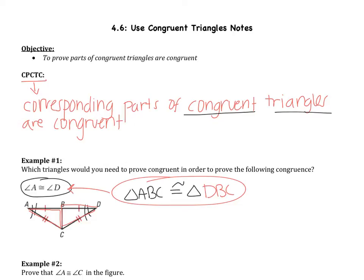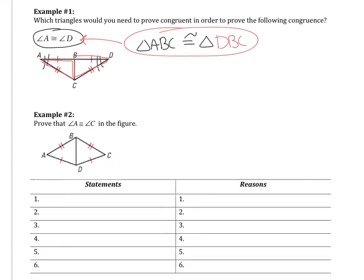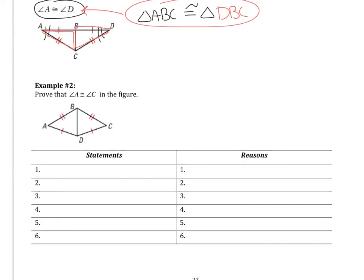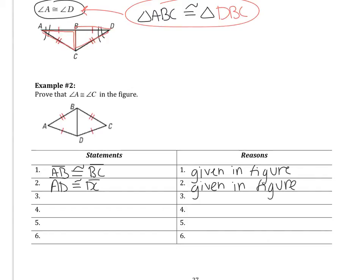This is a somewhat confusing concept, so let's jump into a proof example to show how we're going to use CPCTC. Here's the figure — we are asked to prove that angles A and C are congruent. First, we write down what we know. AB is congruent to BC — that's given in the figure. AD is congruent to DC — also given in the figure. Those angles are corresponding parts of the left and right triangles, so we need to first prove those triangles are congruent.